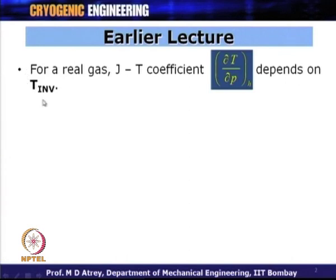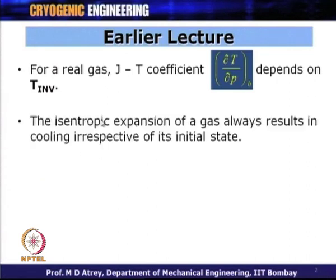We learnt the concept of inversion temperature, which is del T upon del P at constant enthalpy, and we found that in order to get the JT cooling effect for a real gas, the temperature or the initial state of the gas should be less than the inversion temperature. Then we moved from isenthalpic process to isentropic process using reciprocating expansion engines or turbo expanders, and understood that isentropic expansion of a gas always results in cooling irrespective of its initial state.